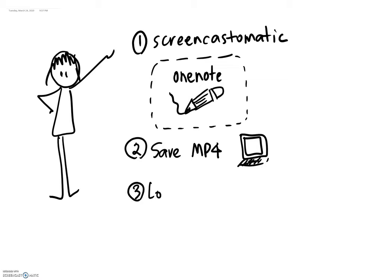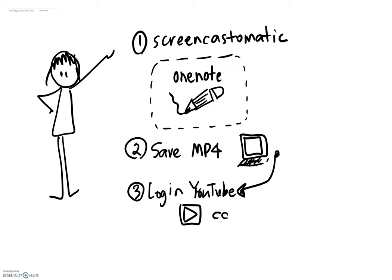Then I'm going to log in to YouTube and upload my video that is local here — upload it to my YouTube account so that the video will be in the cloud on YouTube. That's where captions will get added, and that is where I can link to it in my Canvas course. It won't live in my Canvas course, but I will link to that same YouTube link there.